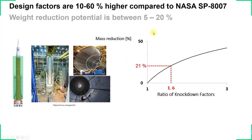This diagram shows the ratio of knockdown factors and the potential mass reduction. A 1.6 times higher knockdown factor can yield up to 21% mass reduction, which would be very significant for large structures like the SLS from NASA. The design factors are 10 to 60% higher compared to NASA SP, with weight reduction potential of 5 to 20%.